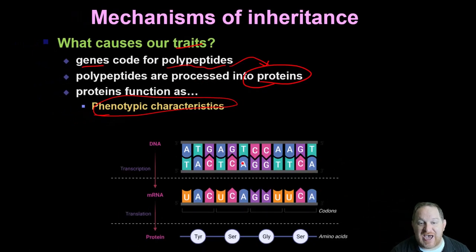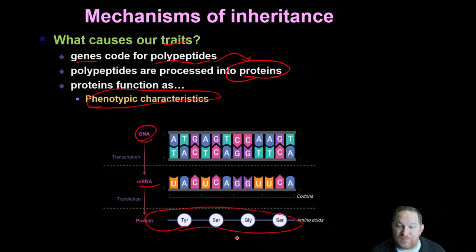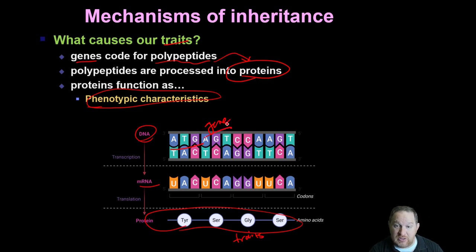Here's a little diagram to remind you: our genes are in our DNA. That DNA is transcribed into RNA, which then makes the protein. The protein is what produces certain traits. So in essence, if I changed my DNA — if I changed the gene — I could essentially change the protein and change the trait.